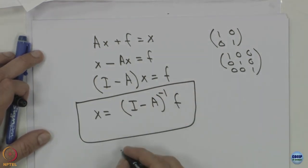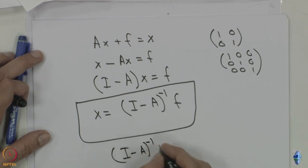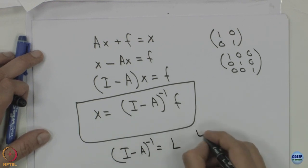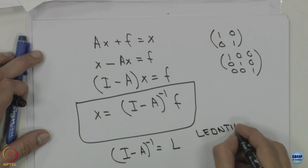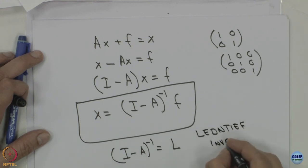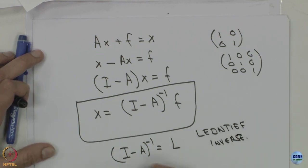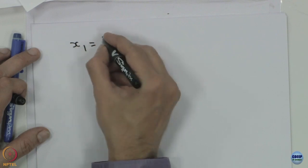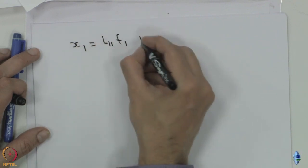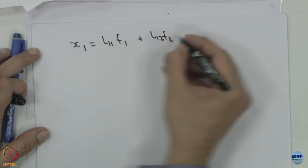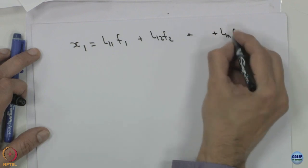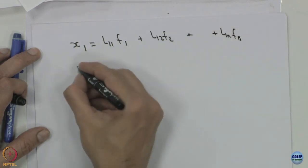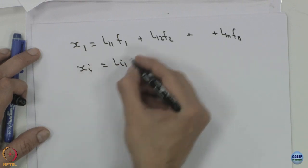This value (I minus A) inverse is called the Leontief inverse, and this can be written as L_ij. So we can write x1 equals L11 f1 plus L12 f2 plus L1n fn, and so on. And x_i equals Li1 f1, and similarly x_n follows the same pattern.